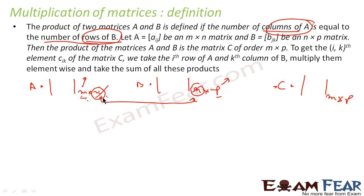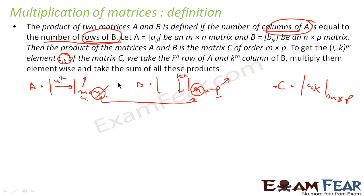To get the element C(i,k) of matrix C, take the full ith row of matrix A and the kth column of matrix B. Multiply the corresponding elements and add them all together — whatever you get becomes C(i,k). We will take some examples to make this concept clear.